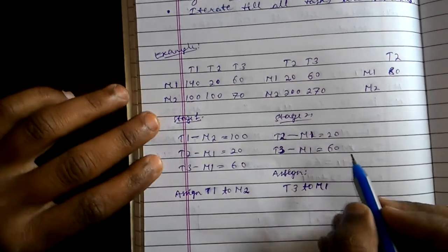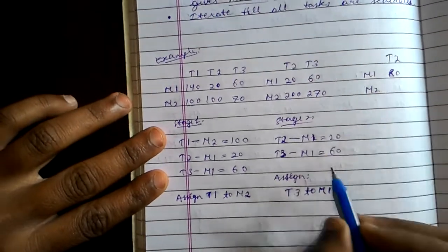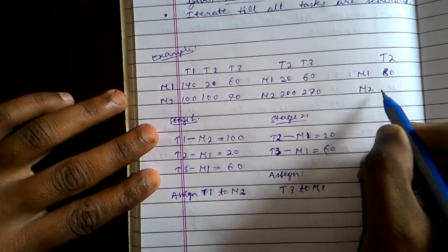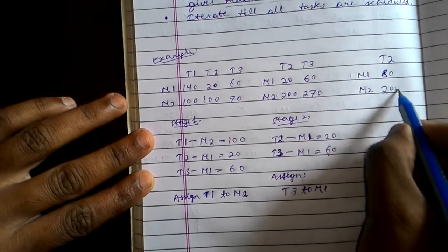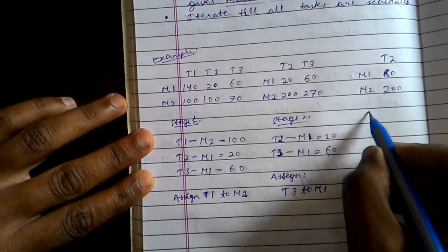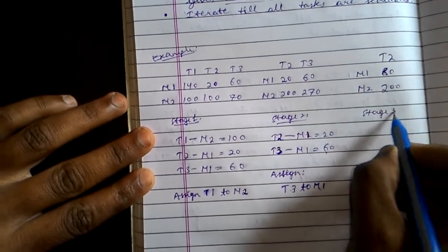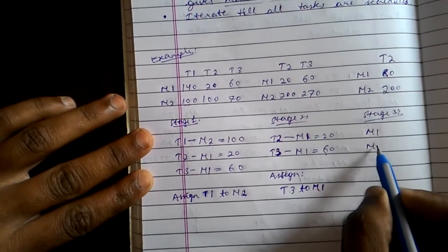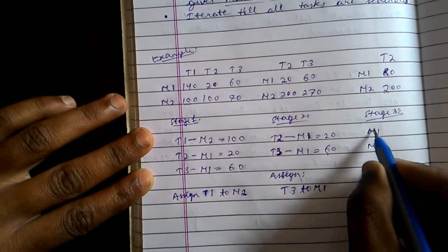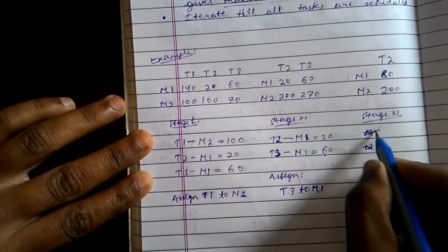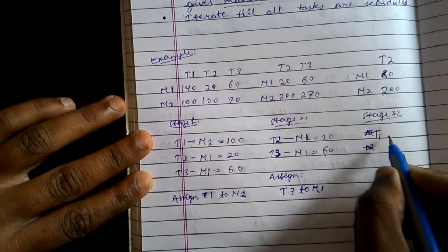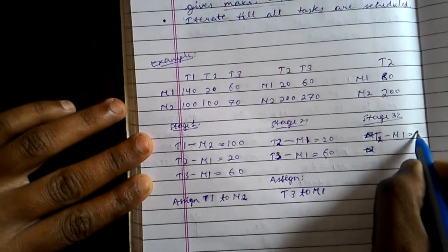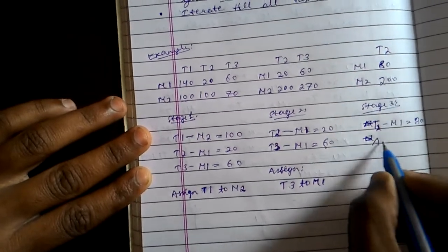Now what I will do, since this 60 has been added up it becomes 20 plus 60 that is 80 and it remains 200. So stage 3: t2 goes to m1 that is 80, so assign t2 to m1.